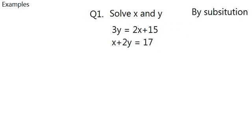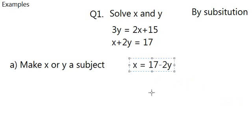What you need to do for the first step is to make x or y a subject. And I think I've covered that before, which is making one of the variable alone on one side, or the rest goes to the other side. So, take the bottom one. For example, I can make x the subject by turning it into x equals 17 minus 2y.